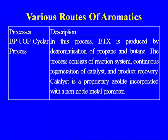Another commercial process — with an installation in Nigeria — produces BTX by aromatization of propane and butane (the Cyclar process). The process consists of a reaction system, continuous regeneration of the catalyst, and product recovery. The catalyst is a proprietary zeolite incorporated with a non-noble metal. There are a series of reactors and heaters similar to the catalytic reforming process, producing aromatics from propane and butane.